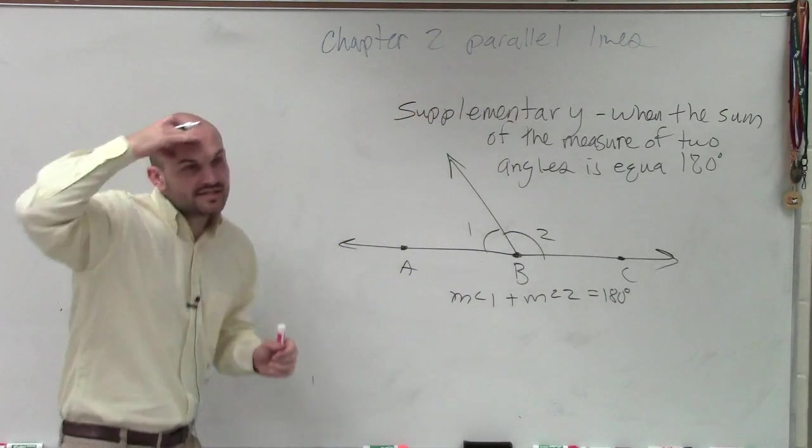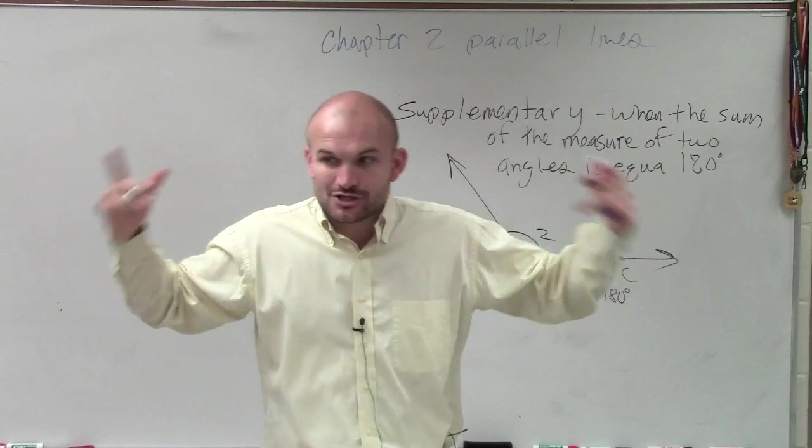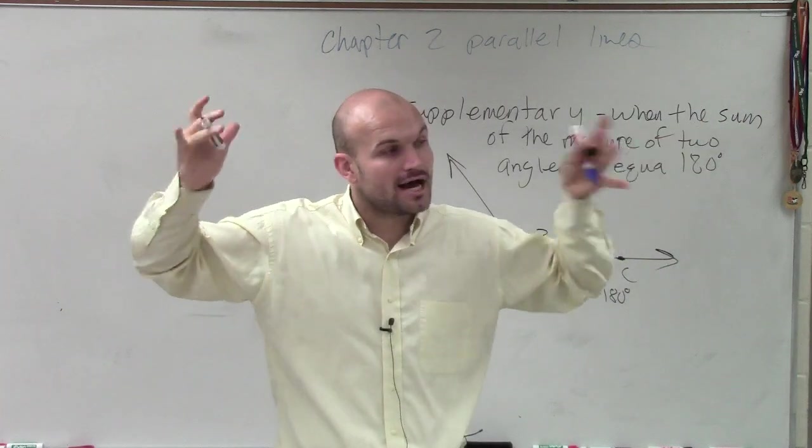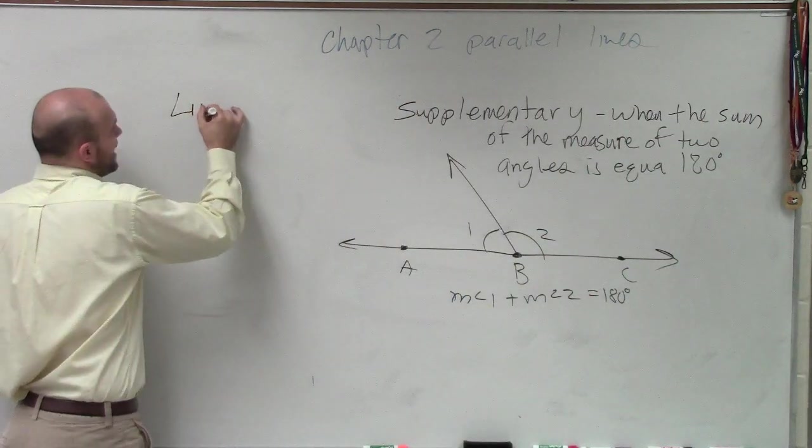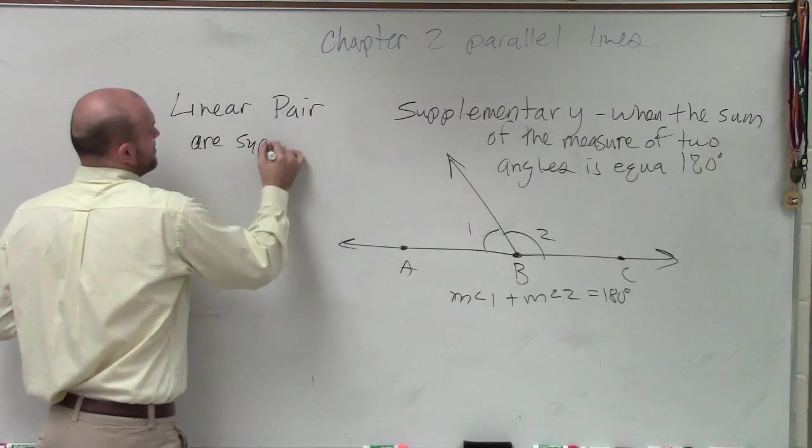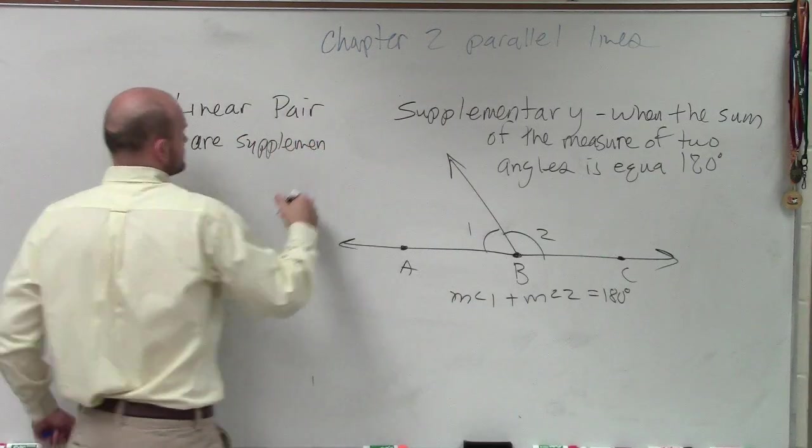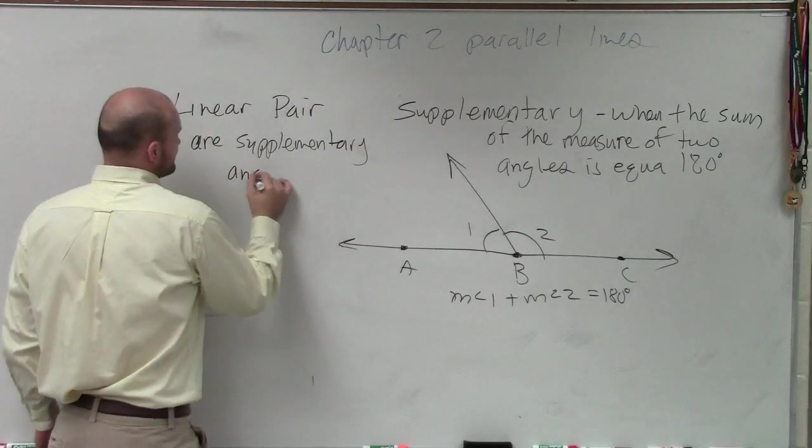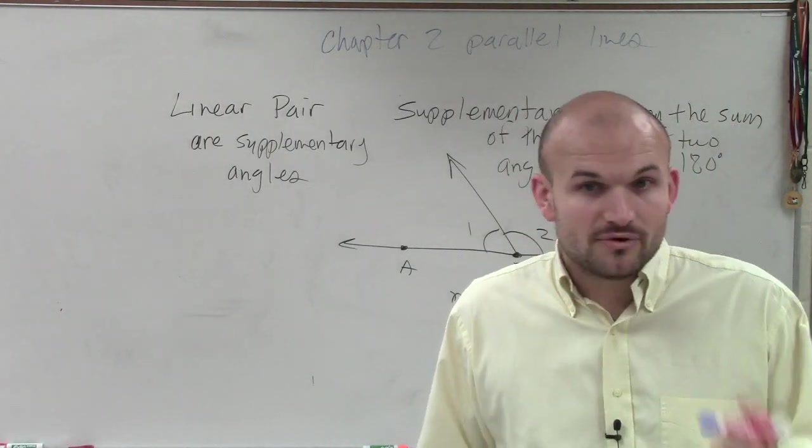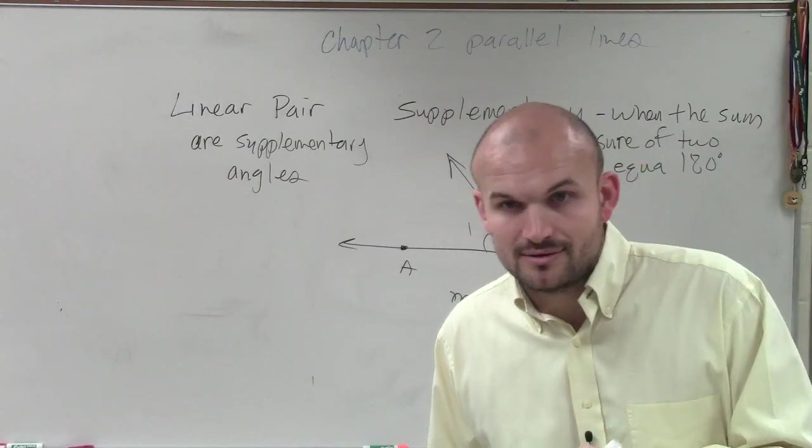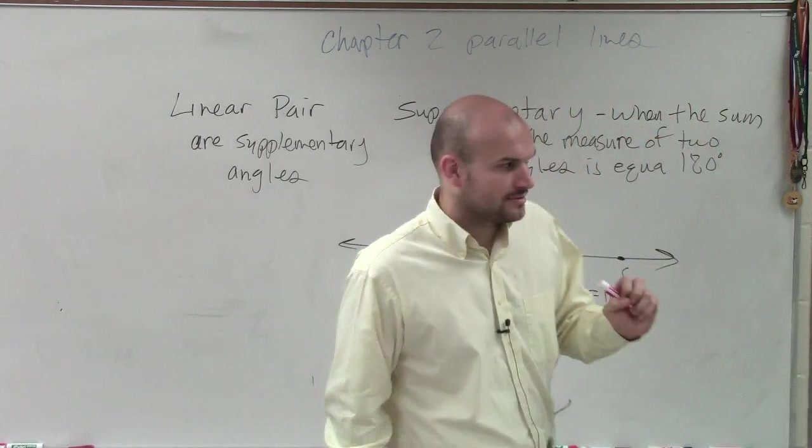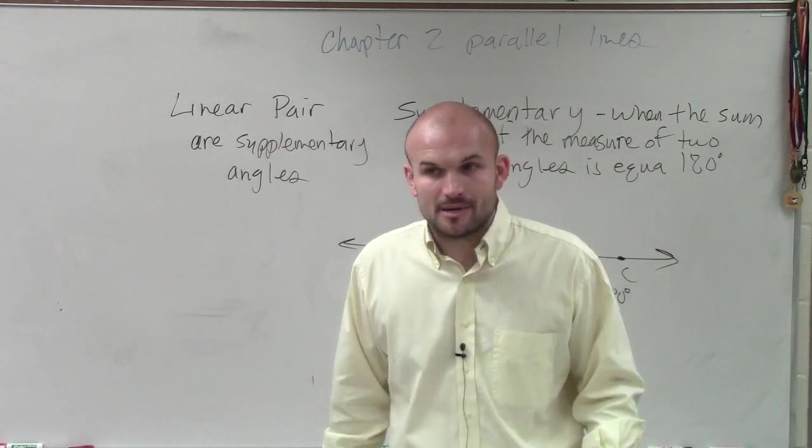ladies and gentlemen, supplementary angles are any two angles that add up to 180. Any two. Doesn't matter what they look like. Those are something that add up to 180. However, a linear pair are supplementary angles. You guys need to write that down. If you have a linear pair, then those two angles are supplementary, meaning those two angles add up to 180.